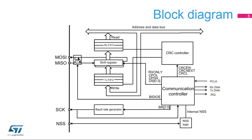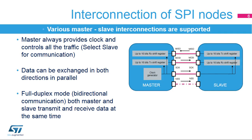The control block features are enabled or disabled depending on the configuration. The SPI master always controls the bus traffic and provides the clock signal to the dedicated slave through the SCK line. The master can select the slave it wants to communicate with through the optional NSS signal. Data stored in the dedicated shift registers can be exchanged synchronously between master and slave through the MOSI, master output-slave input, and the MISO, master input-slave output data lines. When master and slave nodes communicate in full duplex mode, both data lines are used and synchronous data flows in both directions at the same time.